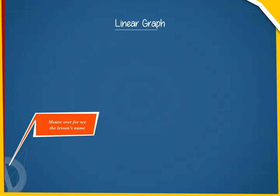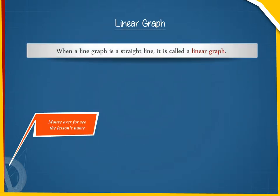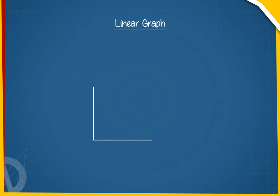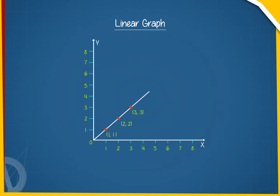When a line graph is a straight line, it is called a linear graph. To draw a linear graph, we need to plot some points on a graph paper. This graph is a linear graph.